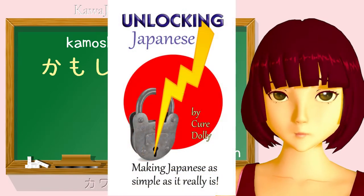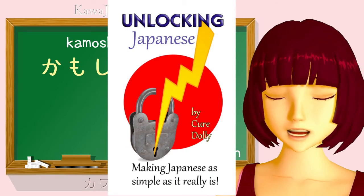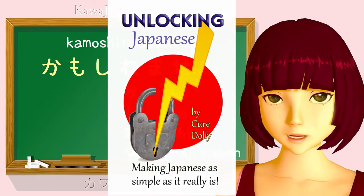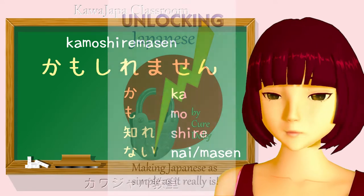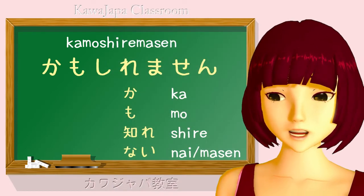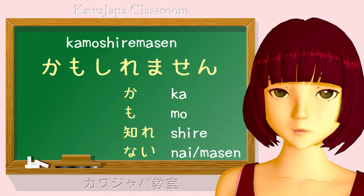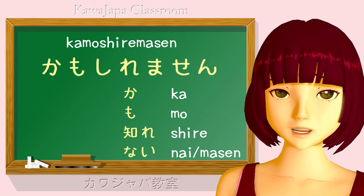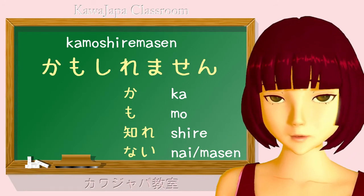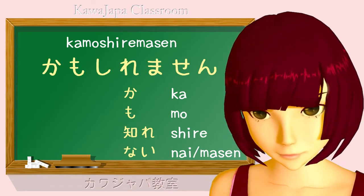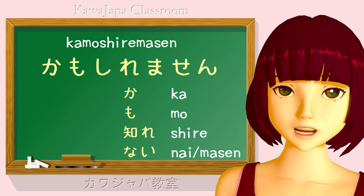Please remember that the course book for this course of lessons is Unlocking Japanese. You can get it at Amazon in Kindle or paperback editions. If you have any questions or comments, please put them in the comments below and I will answer. Thank you for attending this lesson. Kore kara mo yoroshiku onegai shima. Class dismissed.